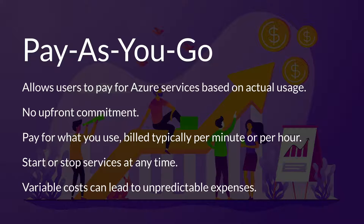The pay-as-you-go model is a flexible option that allows users to pay for Azure services based on actual usage. This comes with no upfront commitment. You only pay for what you use, and you're typically billed per minute or per hour, depending on the resource. The pay-as-you-go model really offers tons of flexibility, and it allows you to start or stop using services at any time, with no need for long-term commitment, adapting to ever-changing business needs.